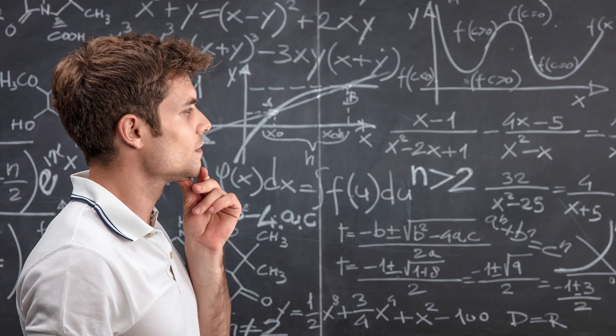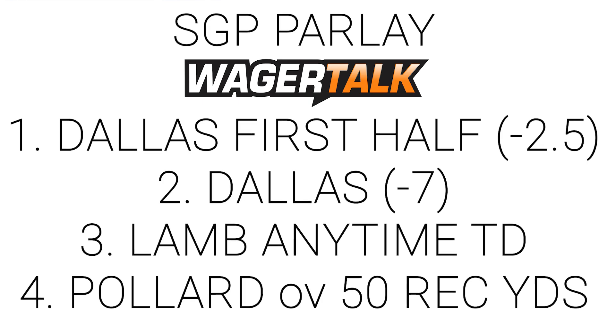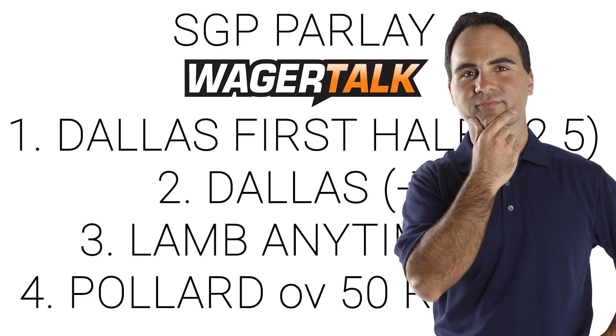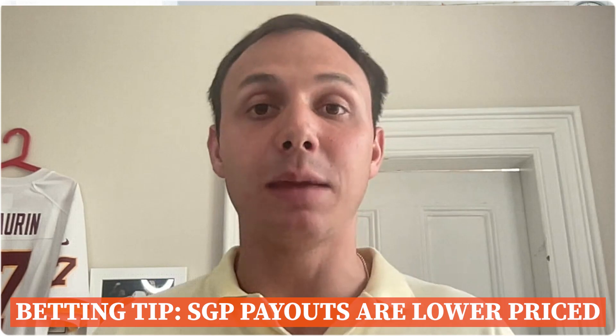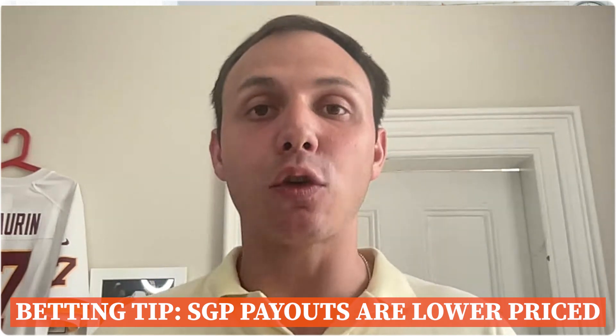In a traditional parlay, the odds are determined by the odds of the straight bets inside that parlay. When you're concocting a same-game parlay on a singular event — for example, if you expect the Dallas Cowboys to win, and you take them minus 2.5 on the first half spread, minus 7 on the full game spread, CeeDee Lamb to score a touchdown, and Tony Pollard to have 50-plus receiving yards — you're going to realize the odds of that bet are lower than they would be if those bets had nothing to do with the same game. That is because these are correlated bets.